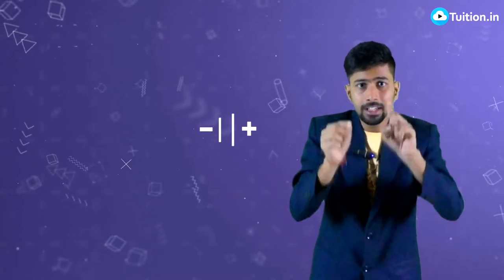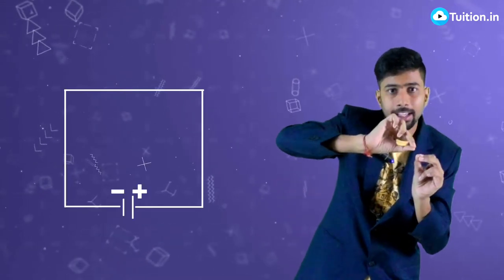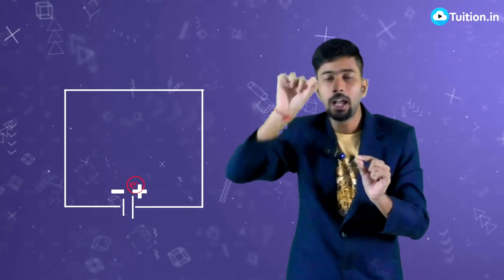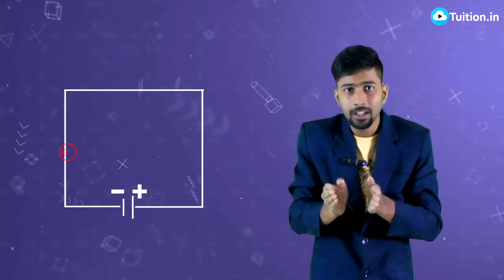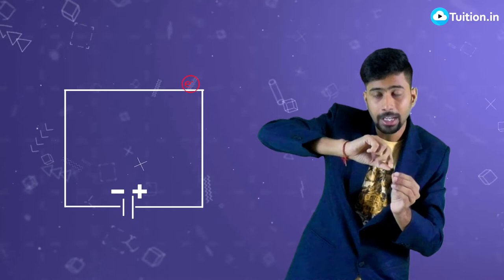Similarly, a battery will do work in taking this electron from the positive terminal and putting it on the negative terminal. And then once again, the electron keeps moving in the random direction and it flows. Once again, when it comes to the positive terminal, the battery will do work in putting the electron from the positive to negative terminal.